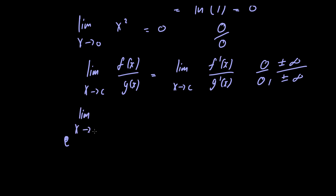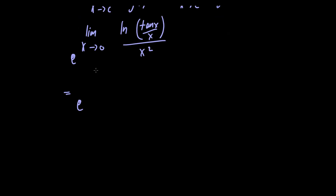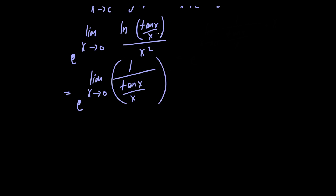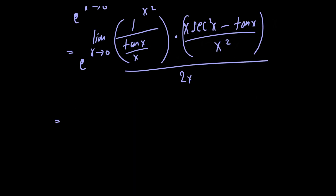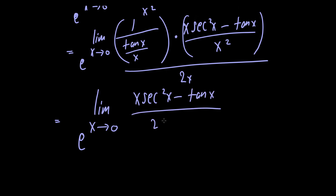So we have e raised to the limit as x approaches 0 of the natural logarithm of tangent of x divided by x, all divided by x squared. Taking the derivative of the numerator: the derivative of the natural log is 1 over its argument, giving 1 over tangent of x divided by x, multiplied by the derivative of the inside using the quotient rule — that's x times secant squared of x minus tangent of x, all over x squared. The denominator derivative is just 2x. Simplifying, we get e raised to the limit as x approaches 0 of x times secant squared of x minus tangent of x, divided by 2x squared times tangent of x.